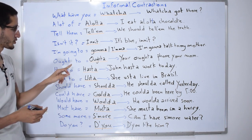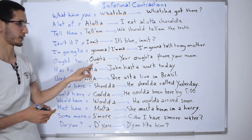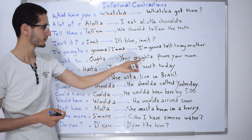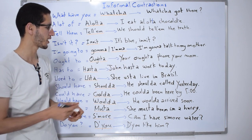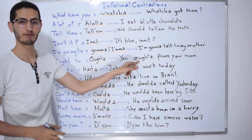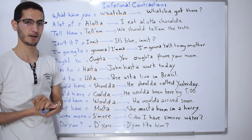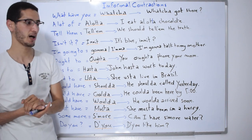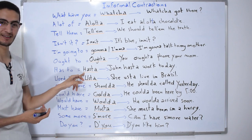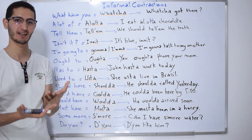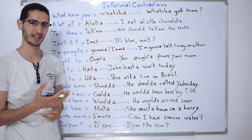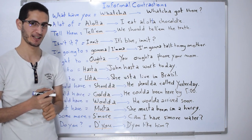'Ought to' becomes 'oughta.' For example: 'You oughta phone your mom.' Then 'has to' becomes 'hasta.' For example: 'John hasta work today' or 'He hasta go to work today.' These are very natural-sounding reductions used in everyday speech.